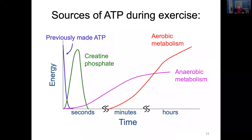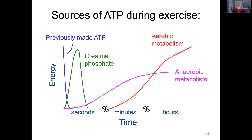This diagram illustrates schematically the time scale for these different processes. There is a small amount of ATP in muscle, giving a couple of seconds of contraction. Creatine phosphate can give several more seconds. Then anaerobic metabolism kicks in. Aerobic metabolism is slower — it takes time for oxygen delivery to fully activate — but it is what can sustain long-term activity.